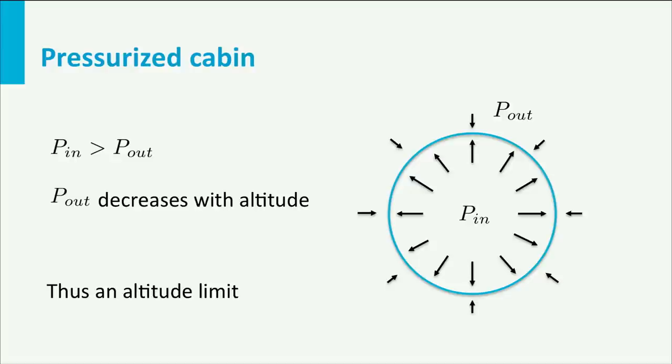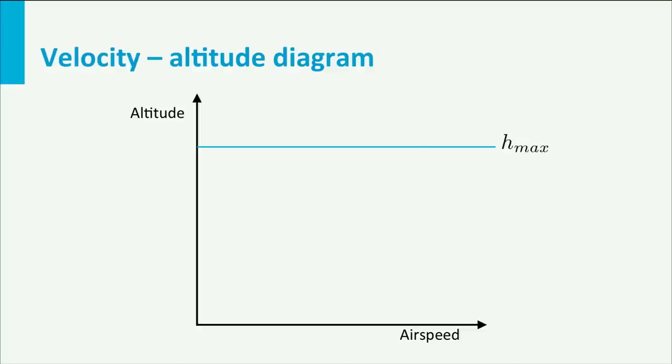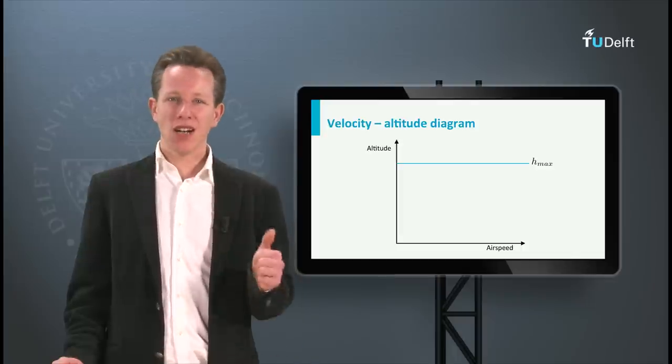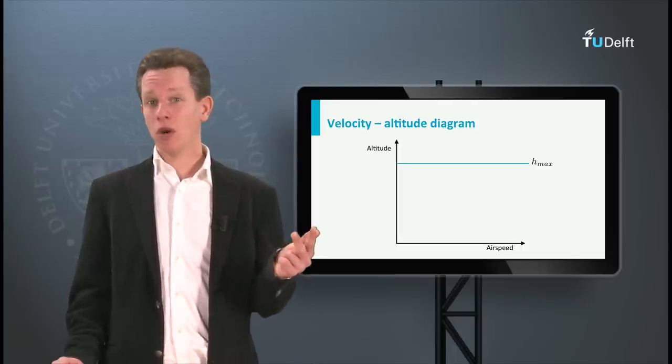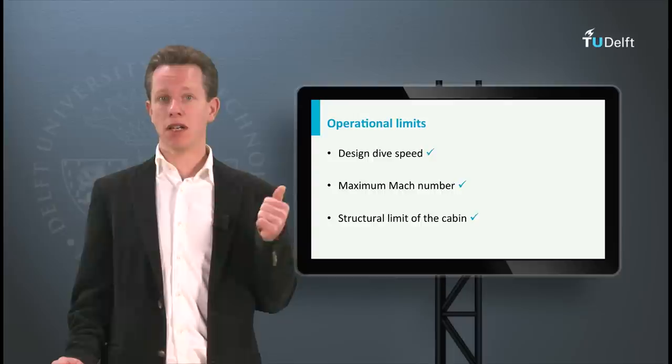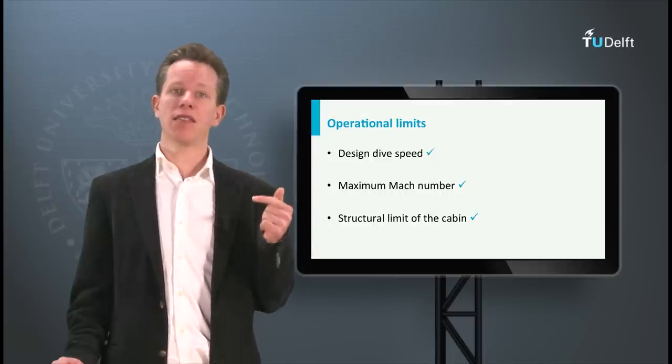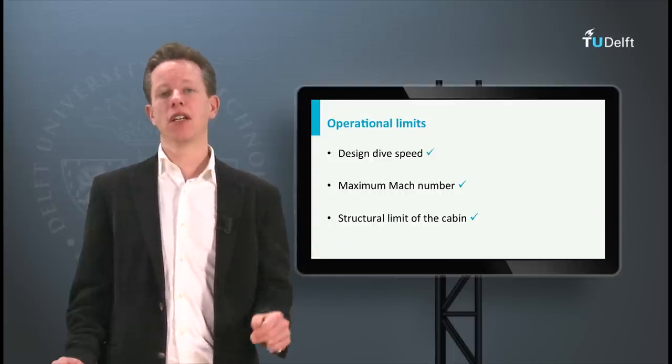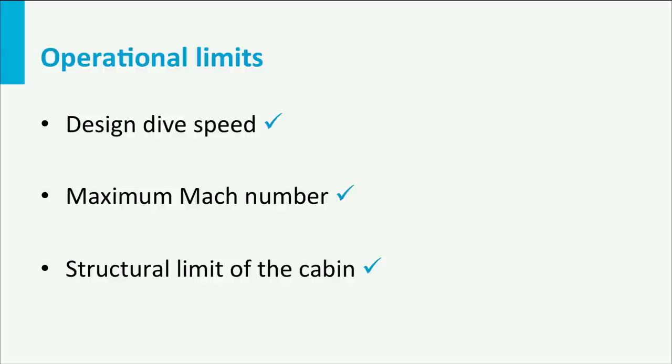This limit can also be drawn in the velocity altitude diagram. It is simply a straight horizontal line indicating the maximum flight altitude. So now I have addressed all three operational limits: the maximum operating speed, the maximum Mach number, and the maximum flight altitude. Let's combine all these limits in one diagram.